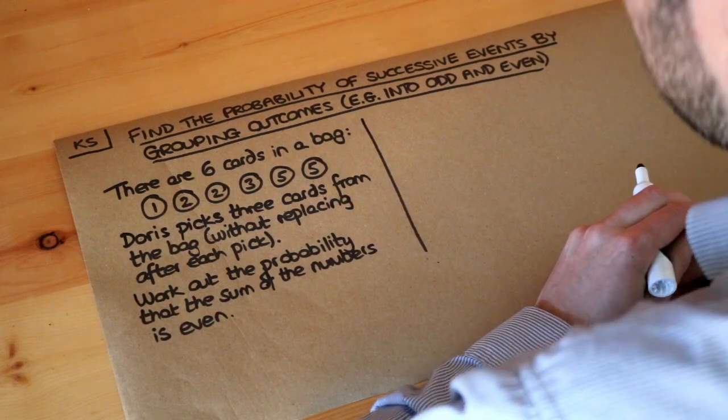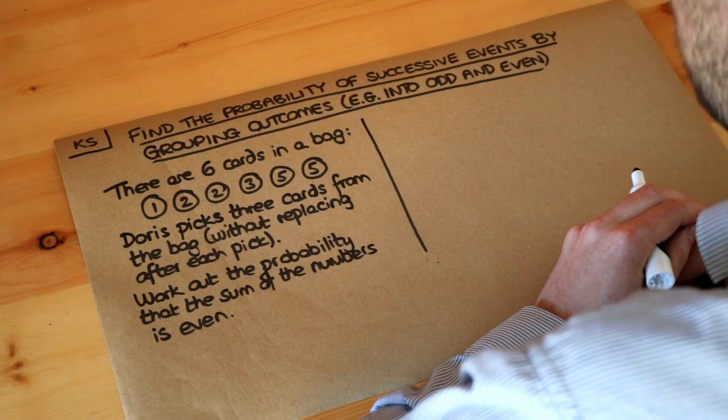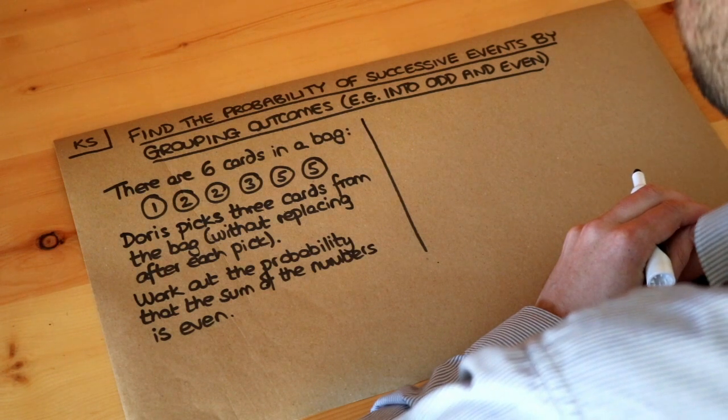Hello and welcome to this Dr. Roster-Mask key skill video on finding the probability of successive events by grouping outcomes, for example, into odd and even.